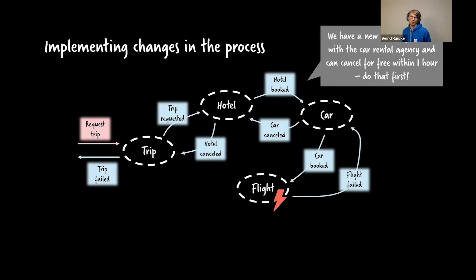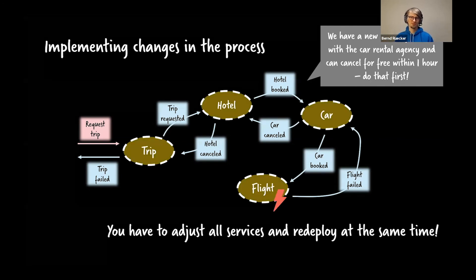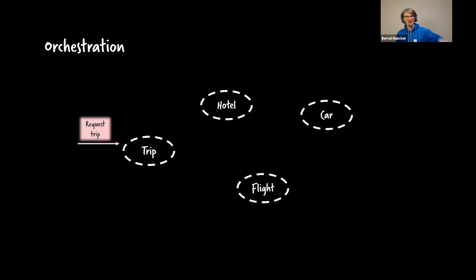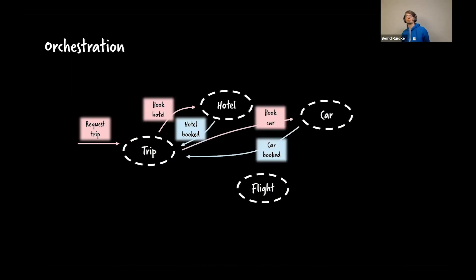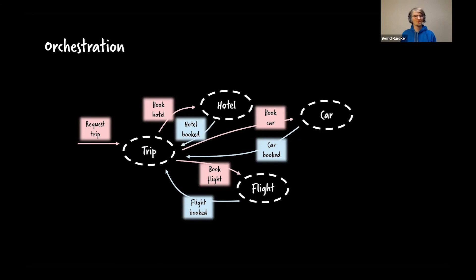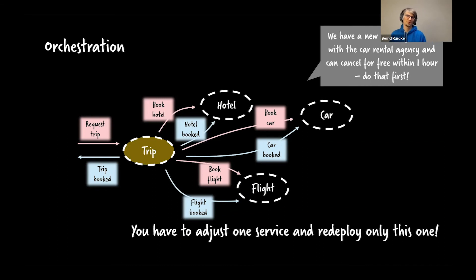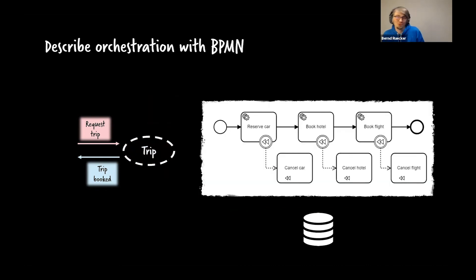If you want to change the sequence — say, book the rental car first because you have a free-cancellation contract — you have to adjust all the services. With orchestration, the trip service commands: 'book the hotel,' then 'book the car,' then 'book the flight.' There's one place to understand the logic, change it, and handle compensation. You can leverage process automation and BPMN's compensation capabilities for that.